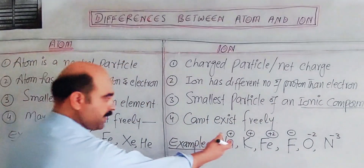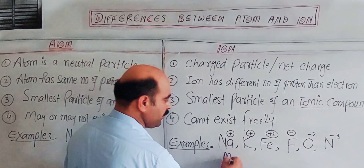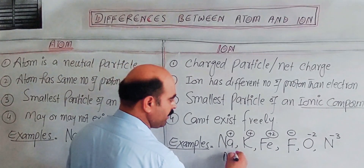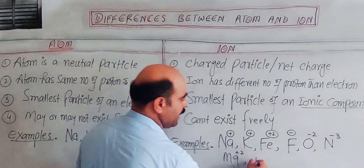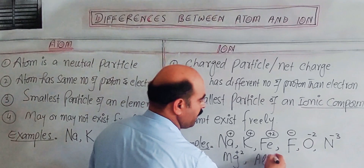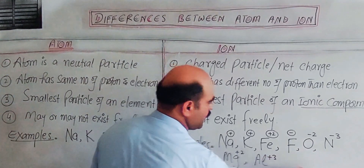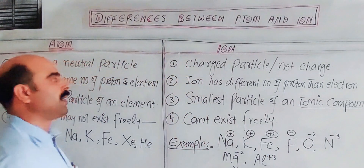Examples of ions include magnesium 2-plus (Mg²⁺) and aluminum 3-plus (Al³⁺). These are examples of positive ions, also known as cations.